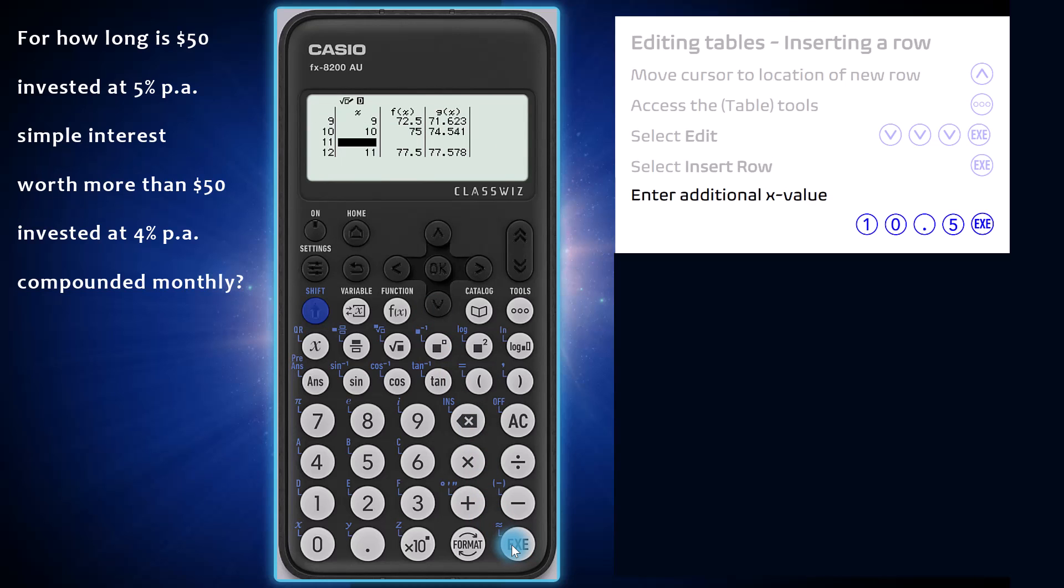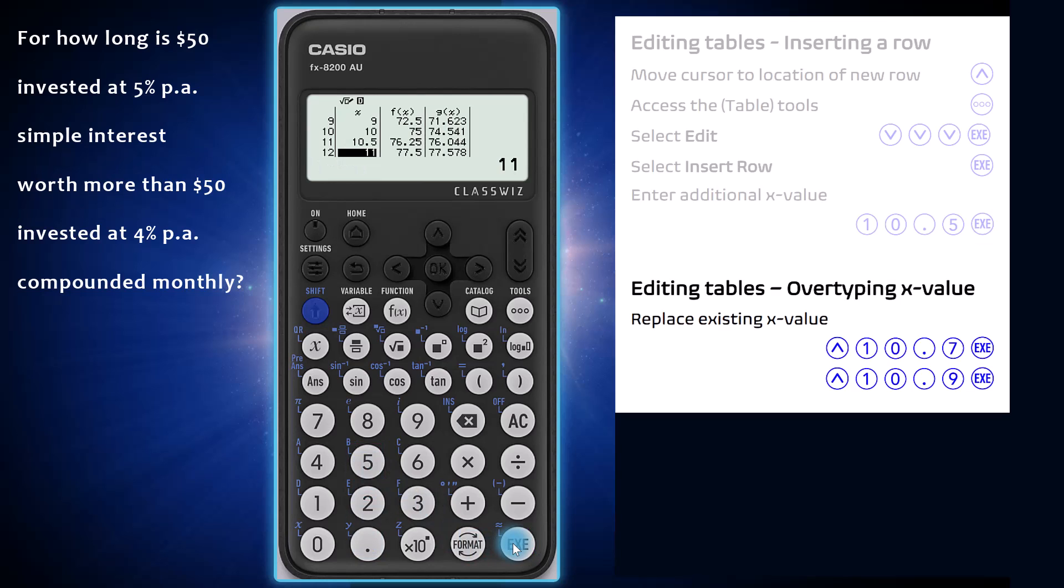With the row inserted, an additional x value like 10.5 can be entered into our table. To refine this estimate further, we can replace it or any other x value in the table with a new one, just by moving the cursor to the location and typing in a new value.